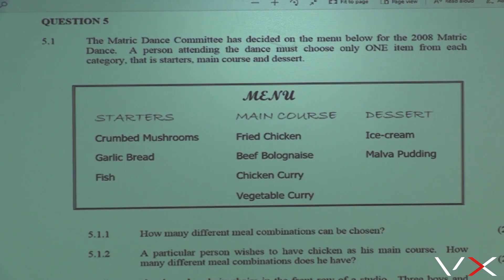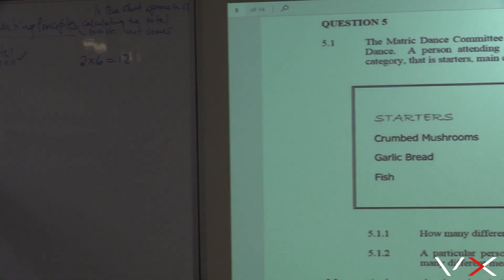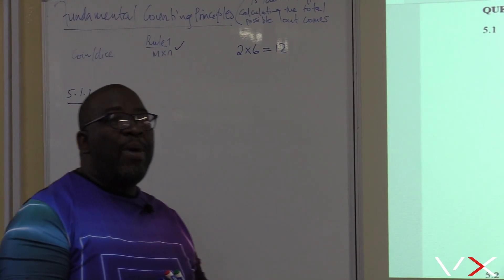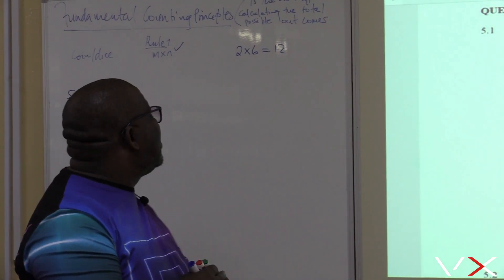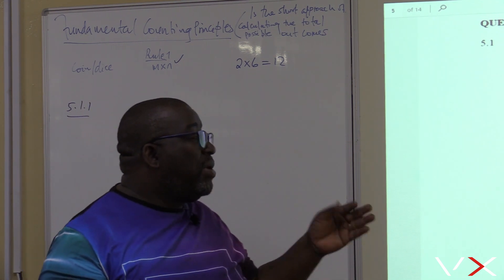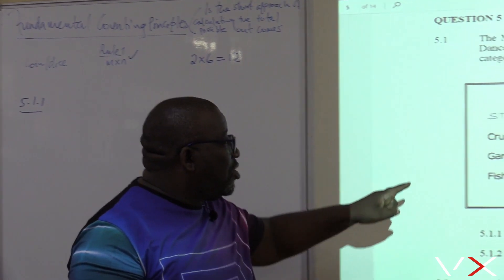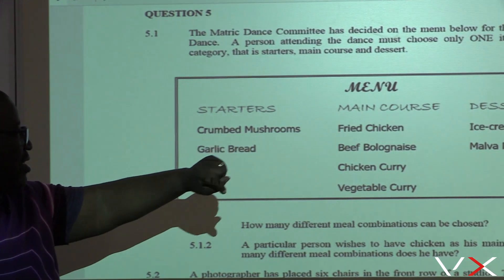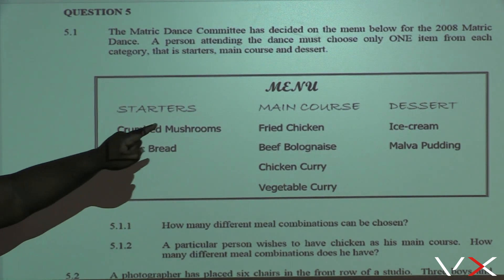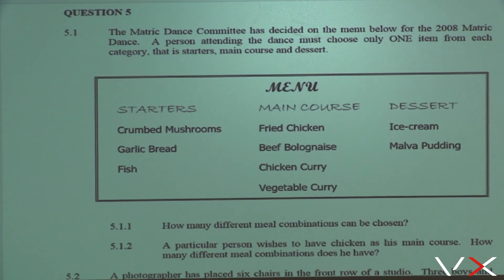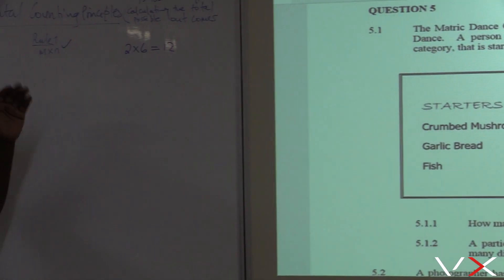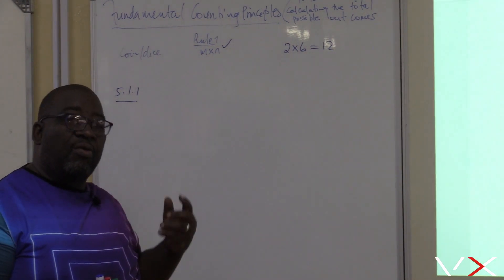Question 5.1.1: How many different meal combinations can be chosen? Remember, this section gives us the shortest approach for calculating total possible outcomes. A child can choose crumbed mushroom, fried chicken, and ice cream; or crumbed mushroom, beef bolognese, and ice cream — and so on. We want to find how many possible combinations there are in total. The fundamental counting principle makes it easier for us to calculate that.